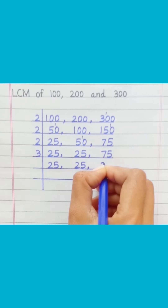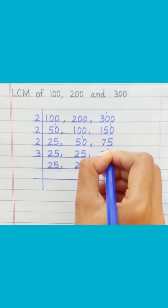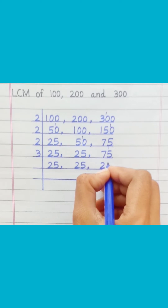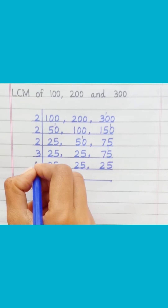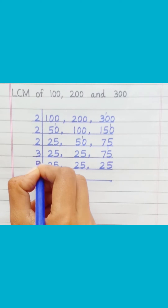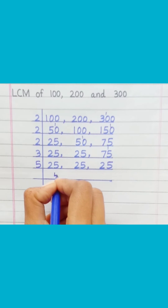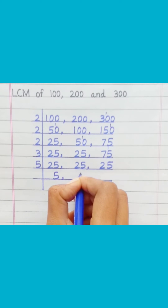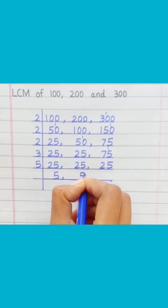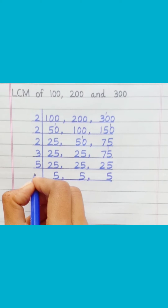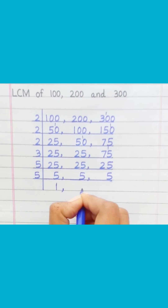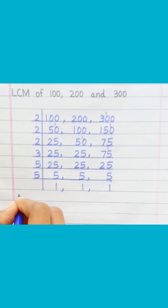3 twos are 6, 3 fives are 15. 5 fives are 25, 5 ones are 5.